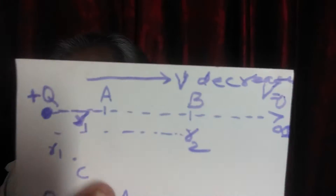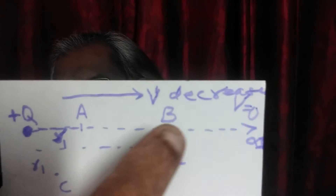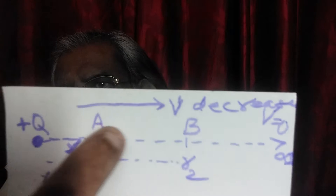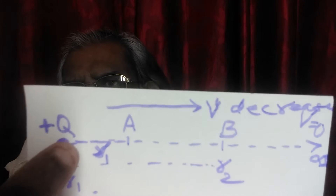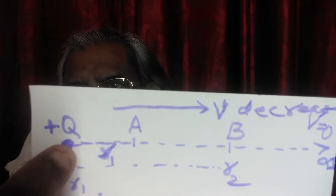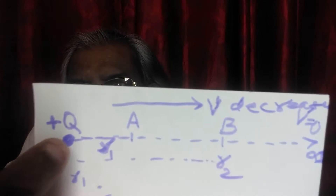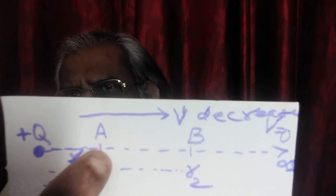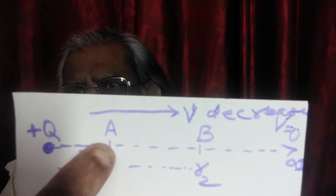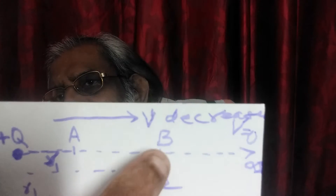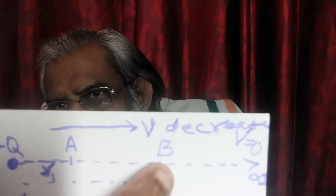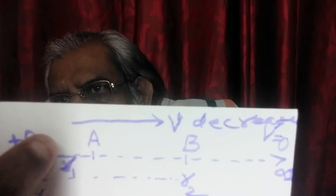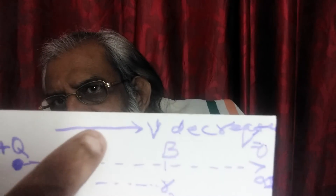That means, if A and B are two points in the vicinity of the positive field-creating charge plus Q, the potential at A will be greater than the potential at B.